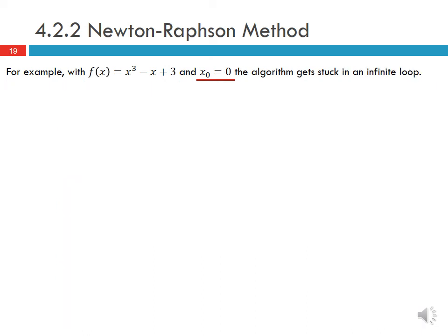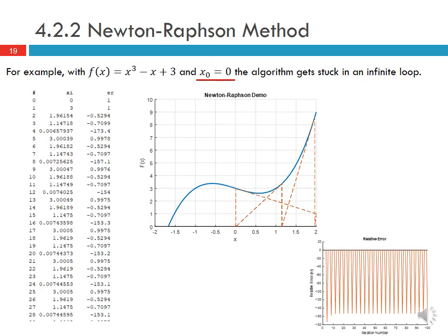With the same function and an initial guess of x0 equal to 0, the algorithm gets stuck in an infinite loop. The estimate cycles repeatedly through the same values — approximately 3, 1.96, 1.1, and 0.007 — over and over, with the relative error oscillating between these values and never converging on the actual root.